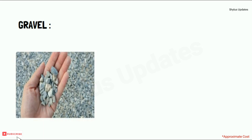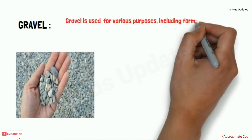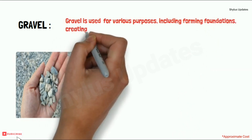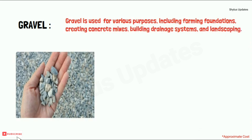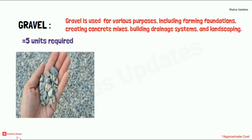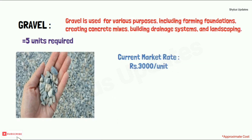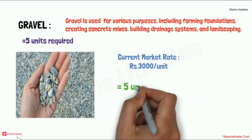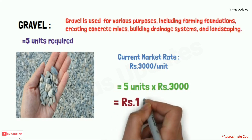Gravel is used for various purposes including forming foundations, creating concrete mixes, building drainage systems, and landscaping. For a 250 square feet house, 5 units of gravel are required. The current market rate of gravel is rupees 3,000 per unit. When you multiply 5 units into rupees 3,000, you get rupees 15,000.